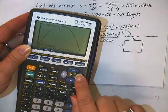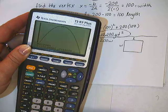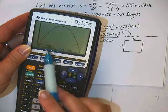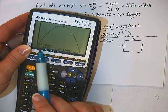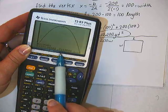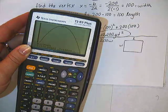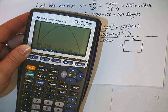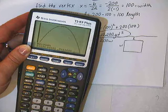Now to find the maximum, all I have to do is go second, trace, which is the calculate menu. Find the maximum, hit enter. I want to make sure my cursor is a little bit to the left of the maximum, and then over a little bit to the right of the maximum, and then hit enter one more time to take it exactly to the maximum point. So you can see there the x value, or the width of the field, would be 100 at the maximum, and then the y value, or the maximum area, will be 10,000, just like our calculations determined.